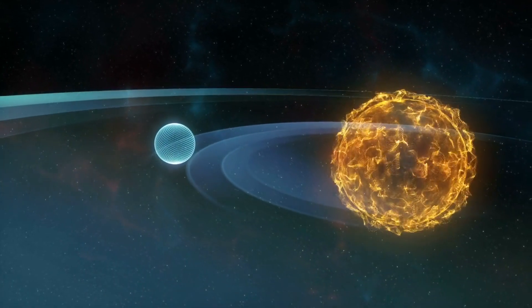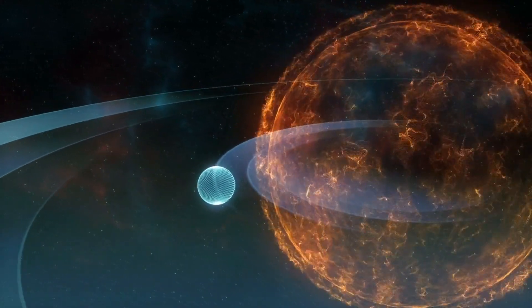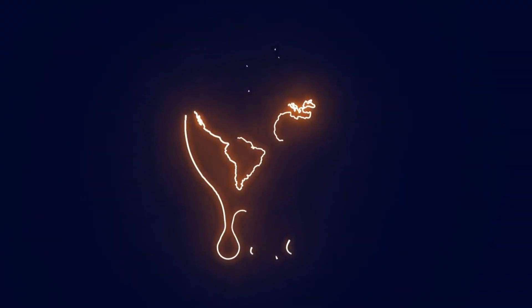During this red giant phase, the expanding Sun will likely grow so large that it will engulf Mercury, Venus and even Earth inside its outer atmosphere. Temperatures on any remaining planets will be scorching hot.